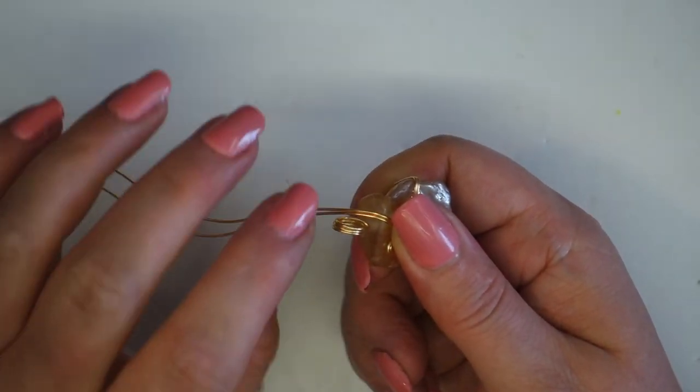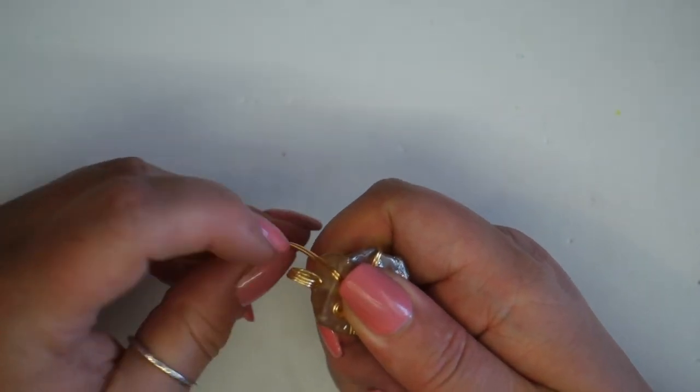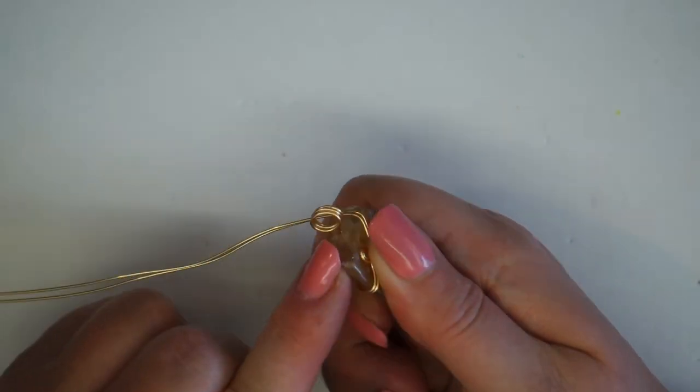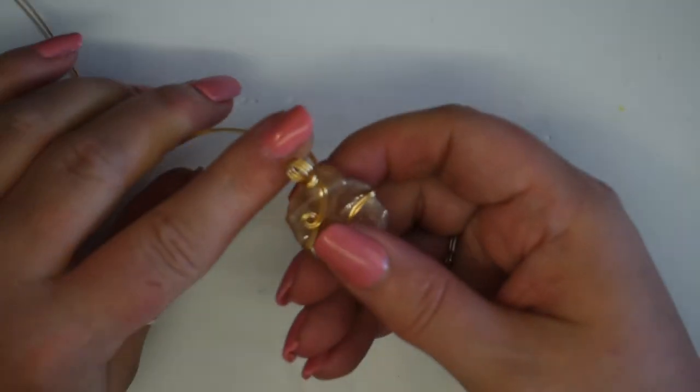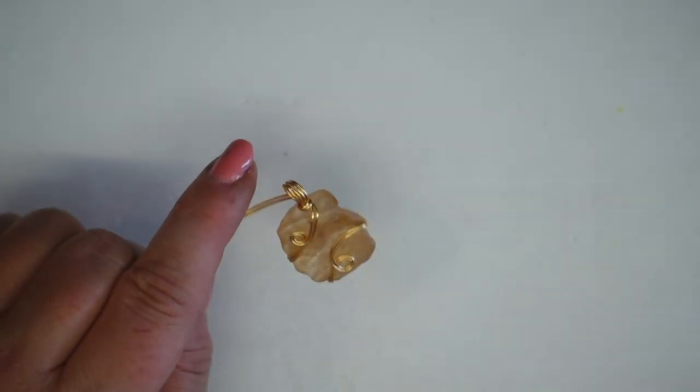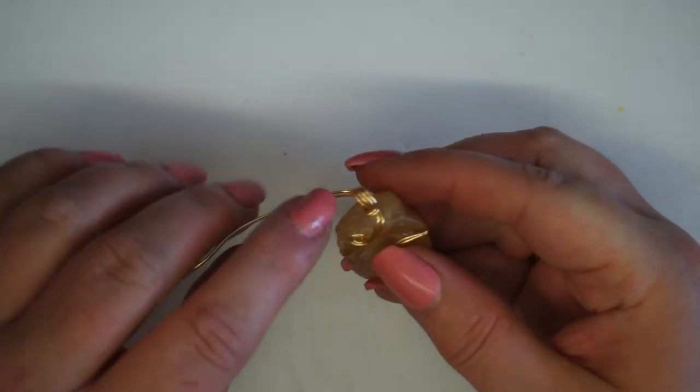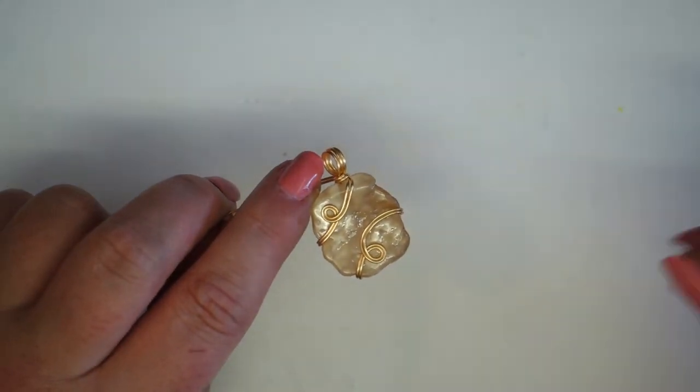Bring that wire up and then we're back towards the bail. So what I want to do is lock all of that together now and this is why I wanted that little bit of height. And we can see it has dropped down into the gemstone a little bit but that's fine. Just gonna bring both those wires around and you could just simply cut those wires now at the back and have it nice and clean and plain like that. I chose to do a tiny little spiral, so it's completely up to you.